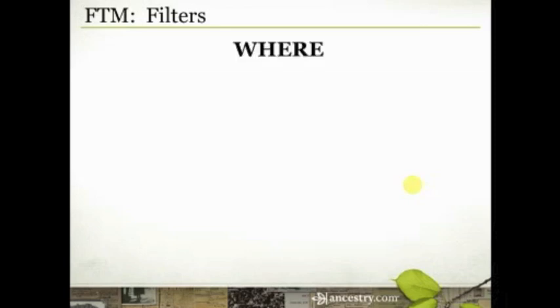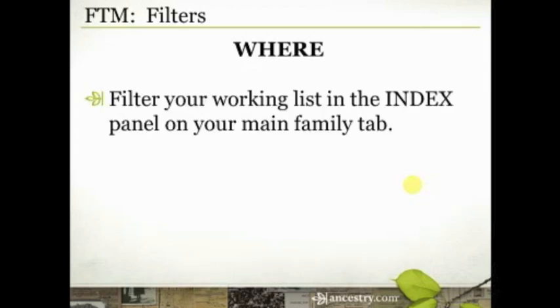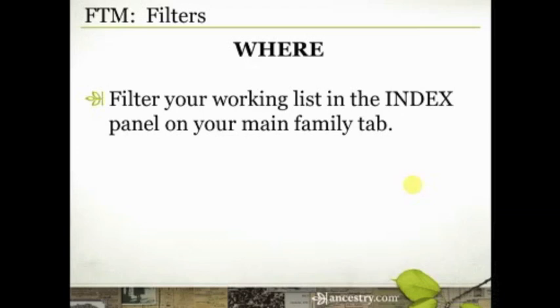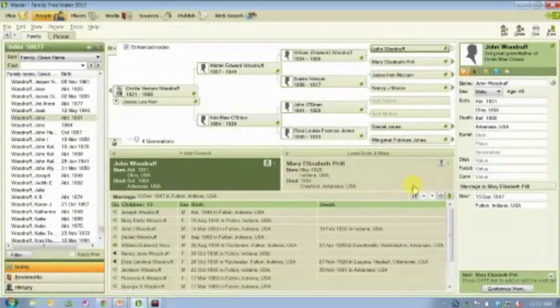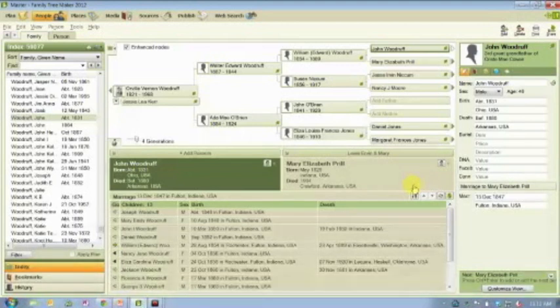Those are some of the reasons why filters are useful. Let me show you where you can find these filters — there are actually a couple of places. The first one is when you're on your main family tab in Family Tree Maker. There is an index panel on the left-hand side — that is where I do the majority of my filtering. I would advise you to make your video viewing window full screen so you can make out the details of what's on my screen. You should at least be able to get an idea of placement on the page.